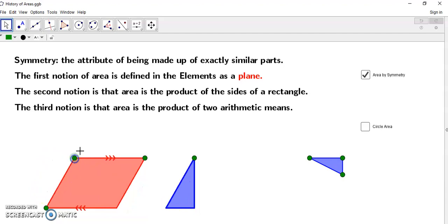And so a very important aspect about areas is that it started early in the concept surrounding symmetry. In other words, what does symmetry mean? It means the attribute of being made up of exactly the same parts or similar parts.